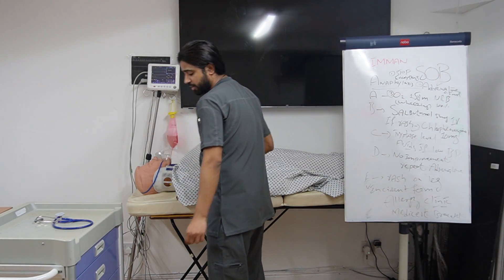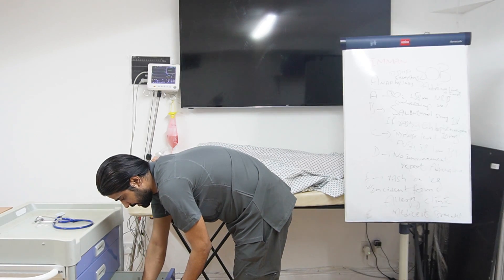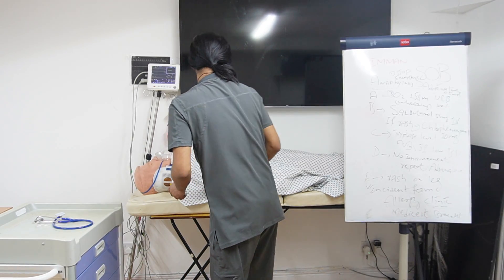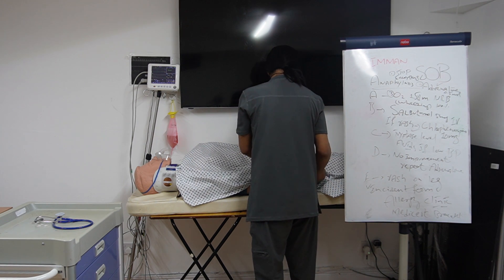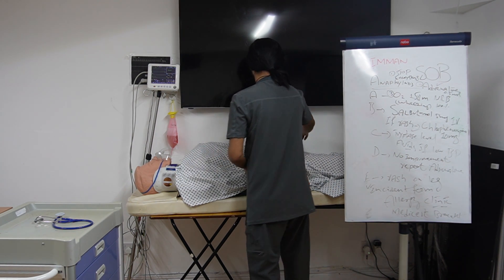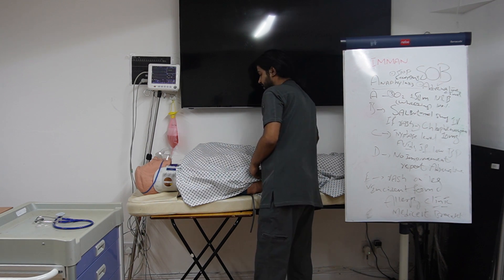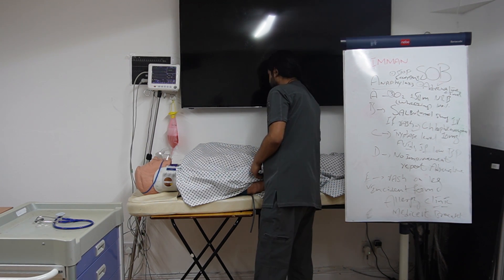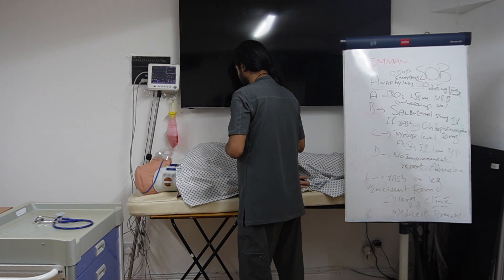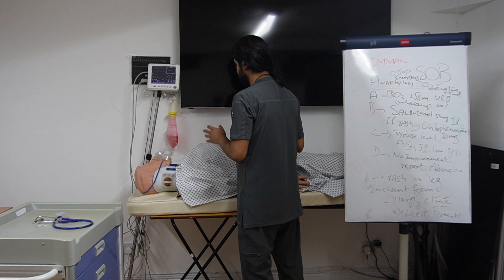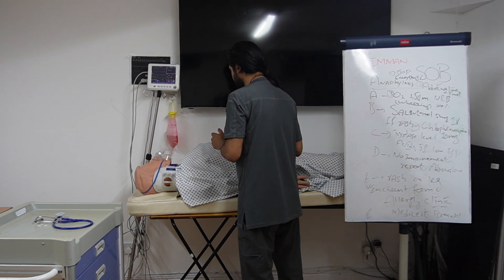Michael, I am going to insert two large-bore cannulas as your blood pressure is on the lower side. I am going to take some bloods for basic investigations, like CBC, inflammatory markers, infection markers, and especially tryptase levels as well. And I am going to start some IV fluids — 500ml, normal saline — and will be reassessing you, and might need to give up to two litres in one hour.